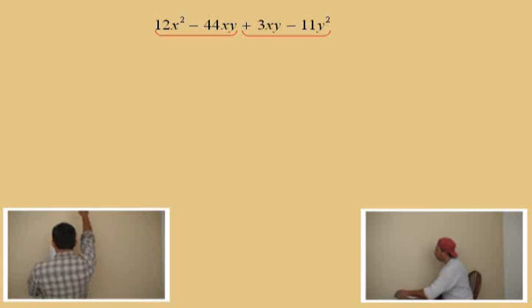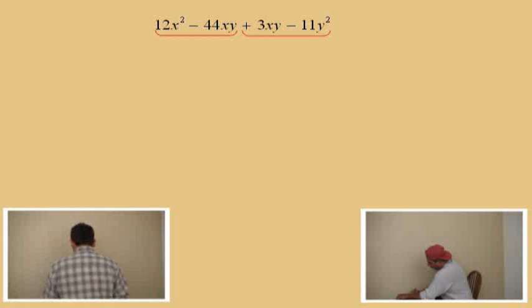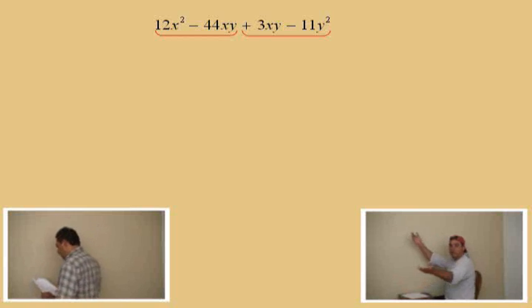Okay, look at the first group, Charlie. We have a 12 and a negative 44. A 12 and a 44. Charlie, what is the greatest common factor for a 12 and a 44? What is the largest number that divides evenly into the 12 and the 44? Four? That's a good one, Charlie. It is four. Very nice.